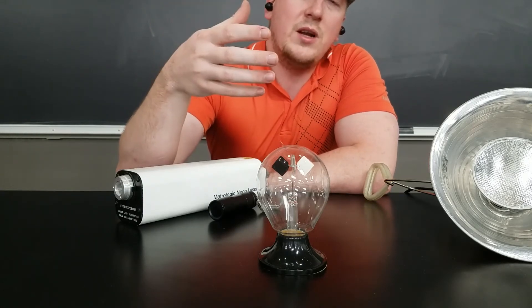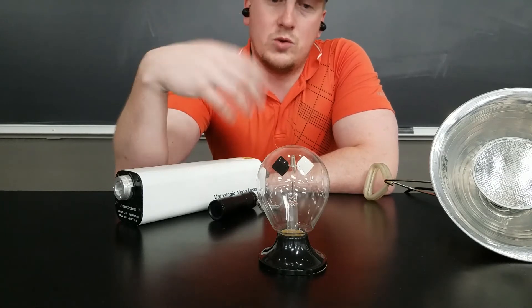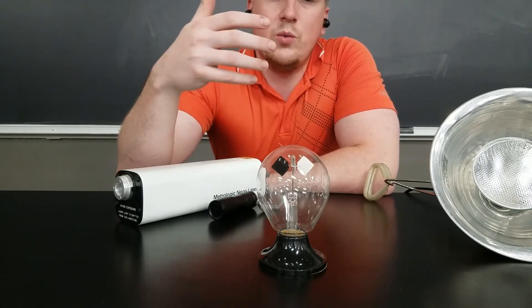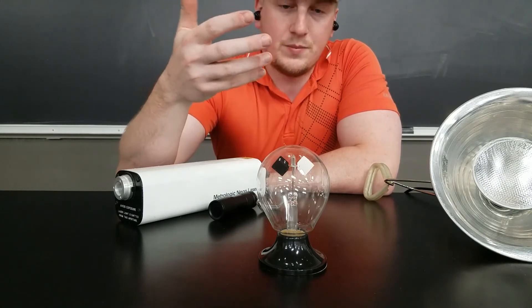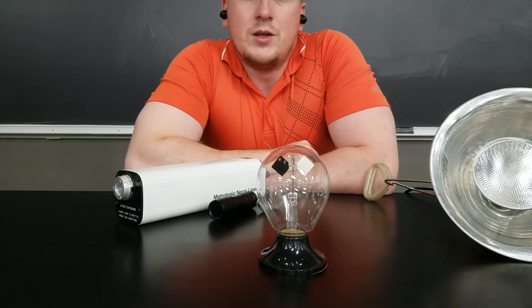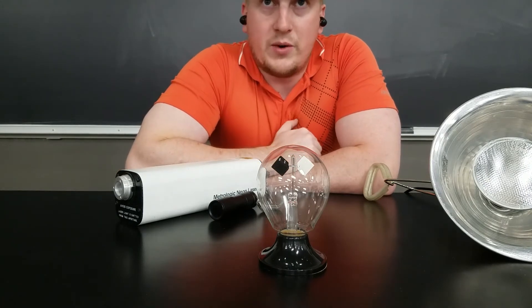So our black painted surface will be a perfect absorber and our white surface will be a perfect reflector in theory. This is all based on black body radiation.